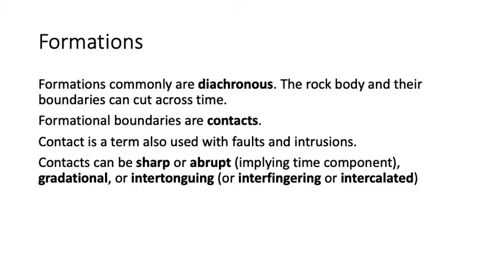For example, if you took a snapshot of the Gulf Coast today you'd see sand up close to the shoreline, silt or mudstones farther offshore, and carbonates like those at Blossom Bank in Texas even farther offshore. Sandstone, shale, and limestone are all being deposited at the same time today, so the resulting rock units will be in facies belts that cut across time.